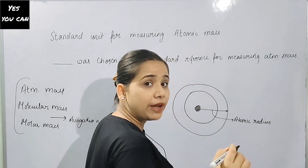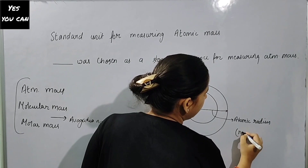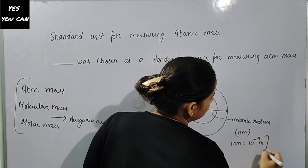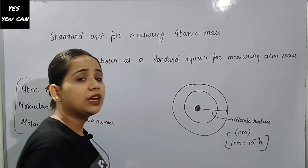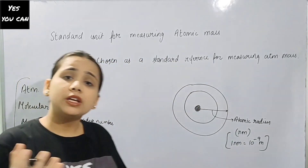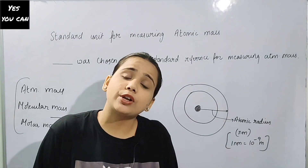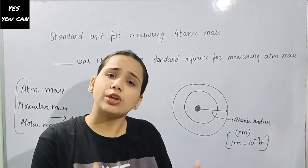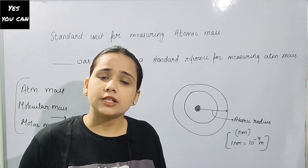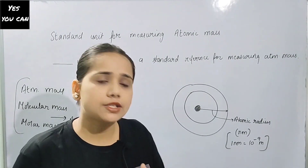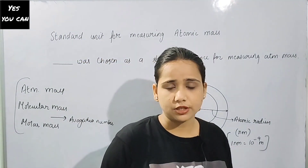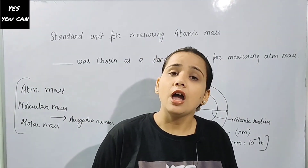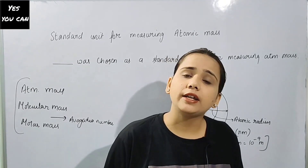Atomic radius is equal to 10 raised to the power minus 9 meter. Because the atom is small, the atomic radius is small. So you need to have some kind of unit for it, since it is a very small unit. We use nanometer — we cannot measure this in meters and kilometers. Atom is small, atomic radius is small.